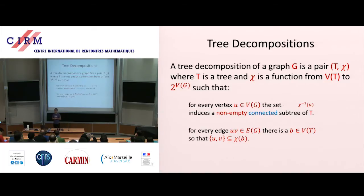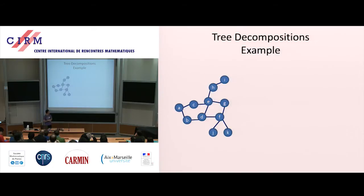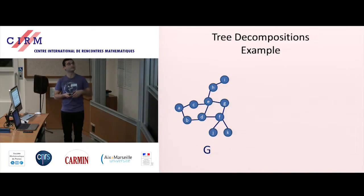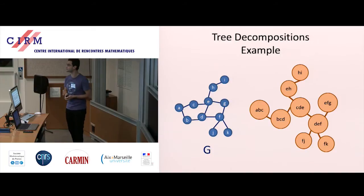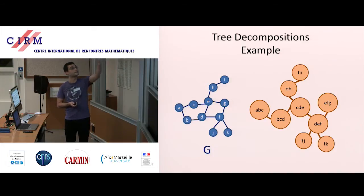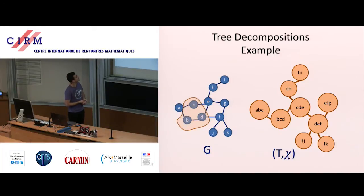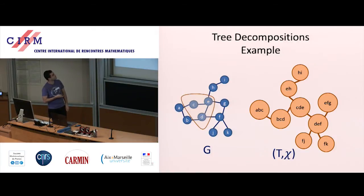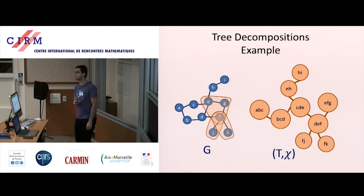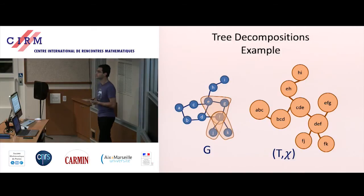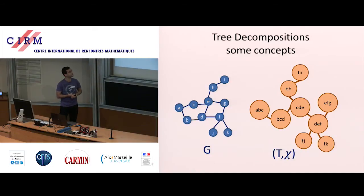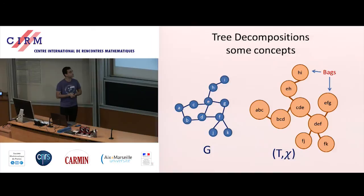This definition isn't too easy to parse on first go, so let's look at the picture. Suppose I have a graph G and I want to give you a tree decomposition of it. It's a tree, and for every vertex of the tree I have labeled the value of chi of that vertex, which is a set of vertices in the graph. The sets attached to every vertex of the tree are called bags. The width of the decomposition is the size of the largest bag minus one.